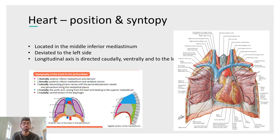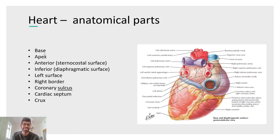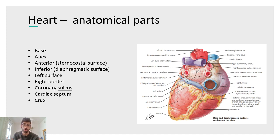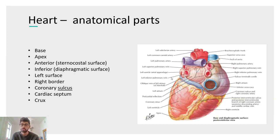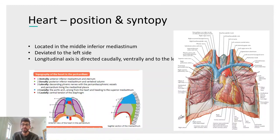If you draw an imaginary line from the base to the apex — the base being superior, the apex inferiorly — in 3D space this vector is oriented caudally, ventrally, and to the left. This comes up frequently in the robot exam. Conversely, the direction of the base is cranially, dorsally, and to the right. Please remember these orientations.